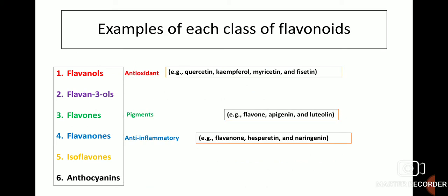Examples of each class: Flavonols, which are antioxidants, include quercetin, kaempferol, myricetin and fisetin. Flavones, which are pigments, include flavone, apigenin and luteolin. Flavanones, known for their anti-inflammatory properties, include hesperidin and naringin.